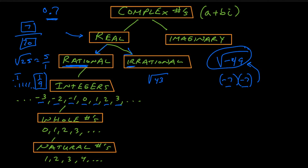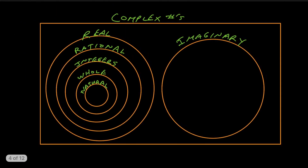Once you determine it's rational, ask: is it an integer? That means a round number that's positive, negative, or zero. A subset of the integers is the whole numbers — that's zero and then the positive round numbers: 0, 1, 2, 3, 4. If we take it one step further to the natural numbers, often called counting numbers — if you ask a kid to count, they'll start at 1, 2, 3, 4 and go up. They usually don't mention zero or negative numbers. So a number can fall into more than one category.